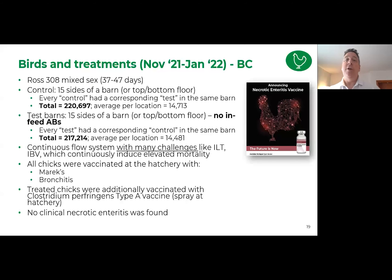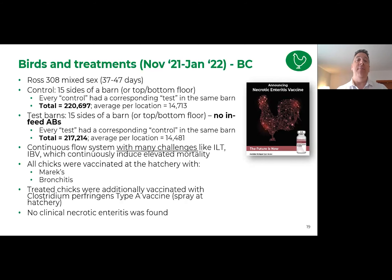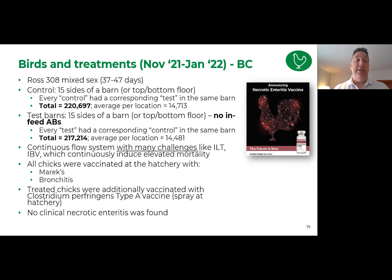Another study was done in British Columbia between November 2021 and January 2022. Using Ross 308s marketed anywhere between 37 and 47 days, this study had 15 control barns and 15 test barns — a top-or-bottom floor or side A and side B approach — with a total of about 220,000 birds on either the control or test program. This is a continuous flow-through system. British Columbia tends to have higher disease pressure, and in this case they had issues with infectious laryngotracheitis and infectious bronchitis, which induced higher levels of mortality.